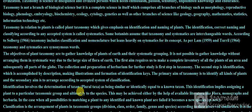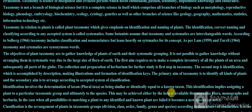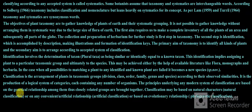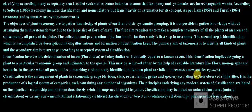Identification involves the determination of a taxon — plural taxa — as being similar or identically equal to a known taxon. This identification implies assigning a plant to a particular taxonomic group and ultimately to the species. This may be achieved either by the help of available literature like flora, monographs, and herbaria. When all possibilities of matching a plant to any identified and known plants are failed, it becomes a new species.